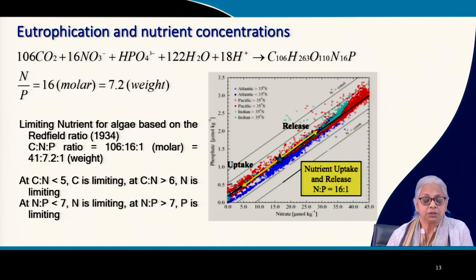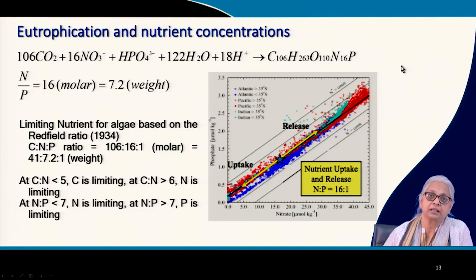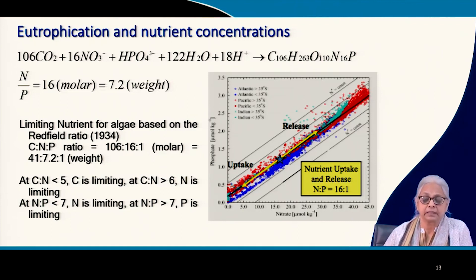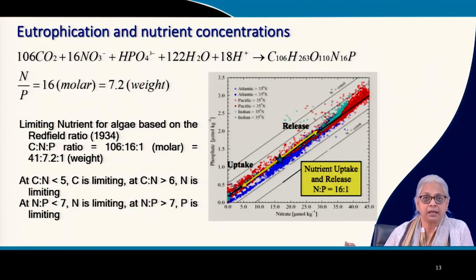In eutrophication, algal production is a function of carbon dioxide, nitrogen, and phosphorus. The empirical stoichiometric formula for an algal cell gives the molar ratios of required nutrients. For a bacterial cell, C₅H₇O₂N is used. Since hydrogen and oxygen are never limiting for organisms growing in water, we focus on carbon, nitrogen, and phosphorus. The nitrogen-to-phosphorus molar ratio is 16, and by molecular weight becomes 7.2.